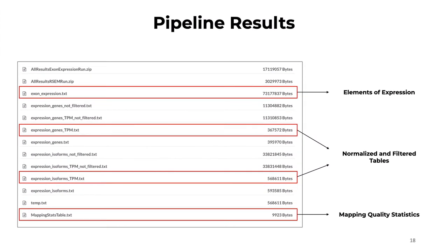When you complete your pipeline, you will find several different outputs typically in TXT format. You will find things like elements of expression, normalized and filtered tables, as well as mapping and quality statistics. Each one of these can be used in a variety of ways to help you understand where you have important patterns that you can use to interpret and validate your analysis results in terms of quality and biological meaning.